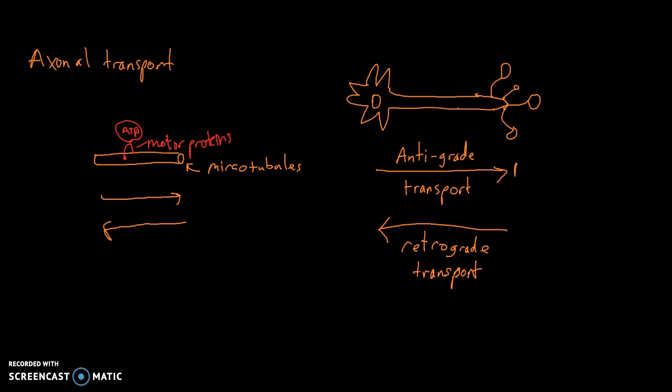So here we would just carry neurotransmitters. So NT is neurotransmitter, enzymes, and mitochondria, proteins, etc.